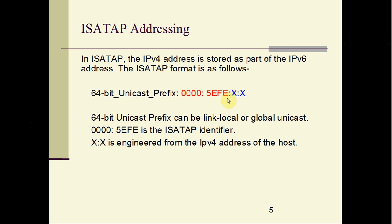Before we go into the configuration aspect of ISATAP tunneling, let us discuss ISATAP addressing. ISATAP addressing uses a different addressing approach. When defining the IPv6 address for our ISATAP tunnel, the first 64 bits can be of the user's choice. The 5th and 6th block in the IPv6 address is fixed to 0000:5EFE — this is our ISATAP identifier, which will automatically be inserted as soon as we change our tunnel mode to ISATAP. The 7th and 8th block of the IPv6 address is derived from the IPv4 tunnel source that we are using.